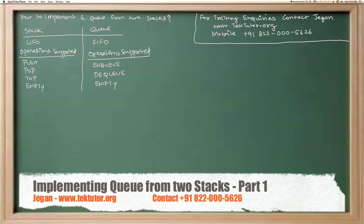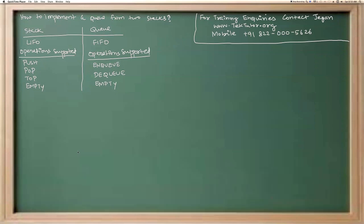Enqueue would insert the entry into the back of the queue. Dequeue would remove the first entry from the queue and then return it. And empty would return true if the queue is empty, otherwise it returns false.